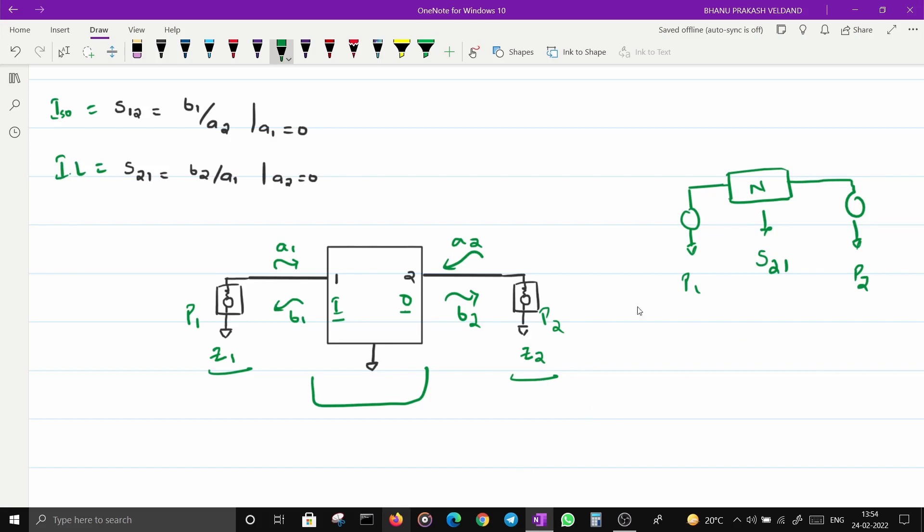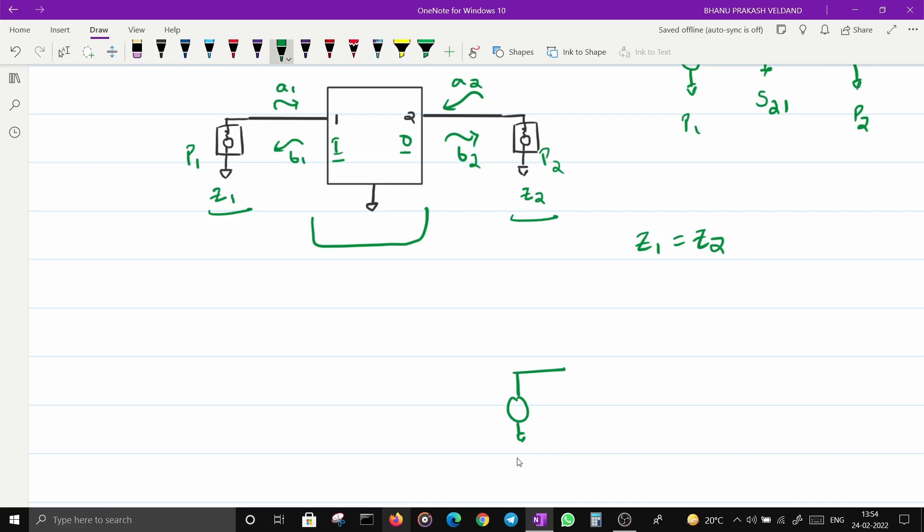So there is one port P1 and another port P2, and because a network N is introduced, this has some loss that is characterized with S21. The loss that occurred because of the insertion of this network is insertion loss. But for all of these things to make more sense, let's make Z1 equal to Z2.